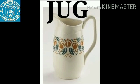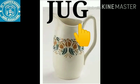J for jug. J, U, G — jug. K for kite. K, I, T, E — kite.